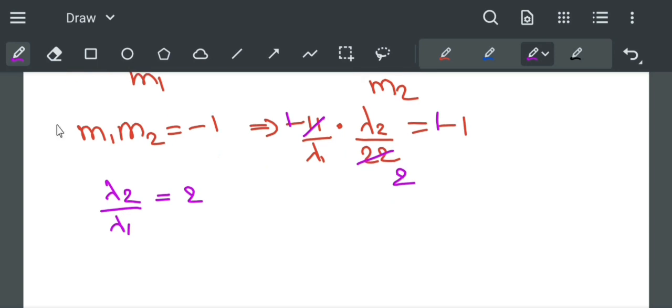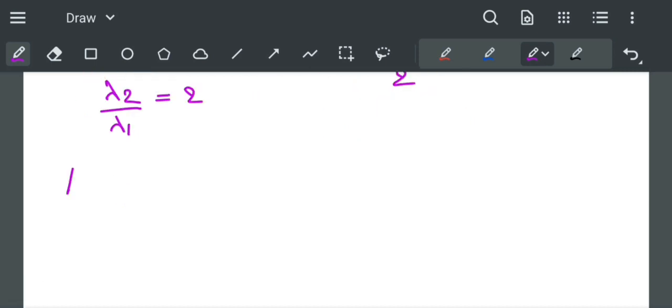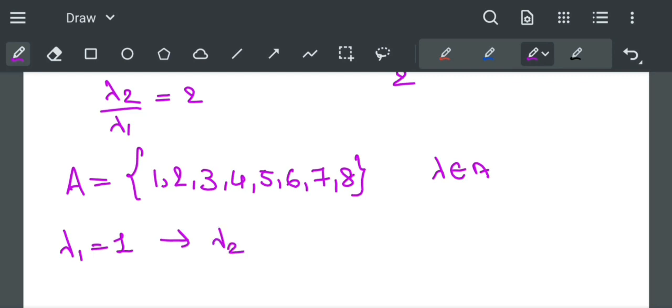So we have to find values of λ₁ and λ₂ such that their ratio is 2. Set A is {1, 2, 3, 4, 5, 6, 7, 8}. Let us take λ₁ = 1, which implies λ₂ = 2.